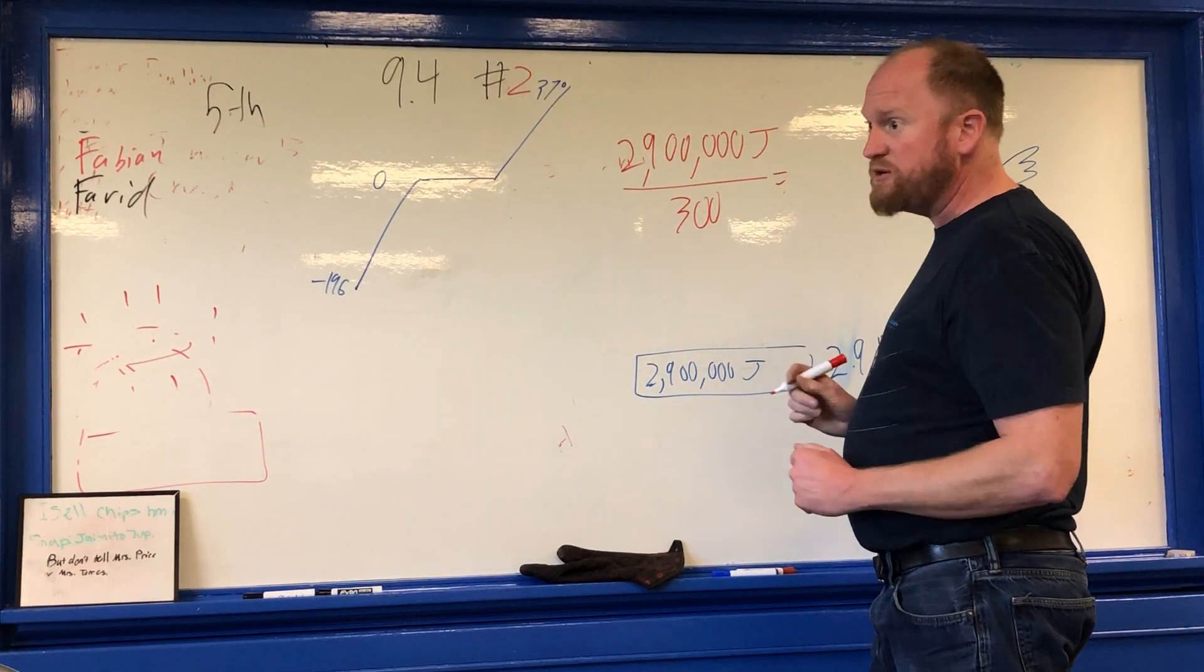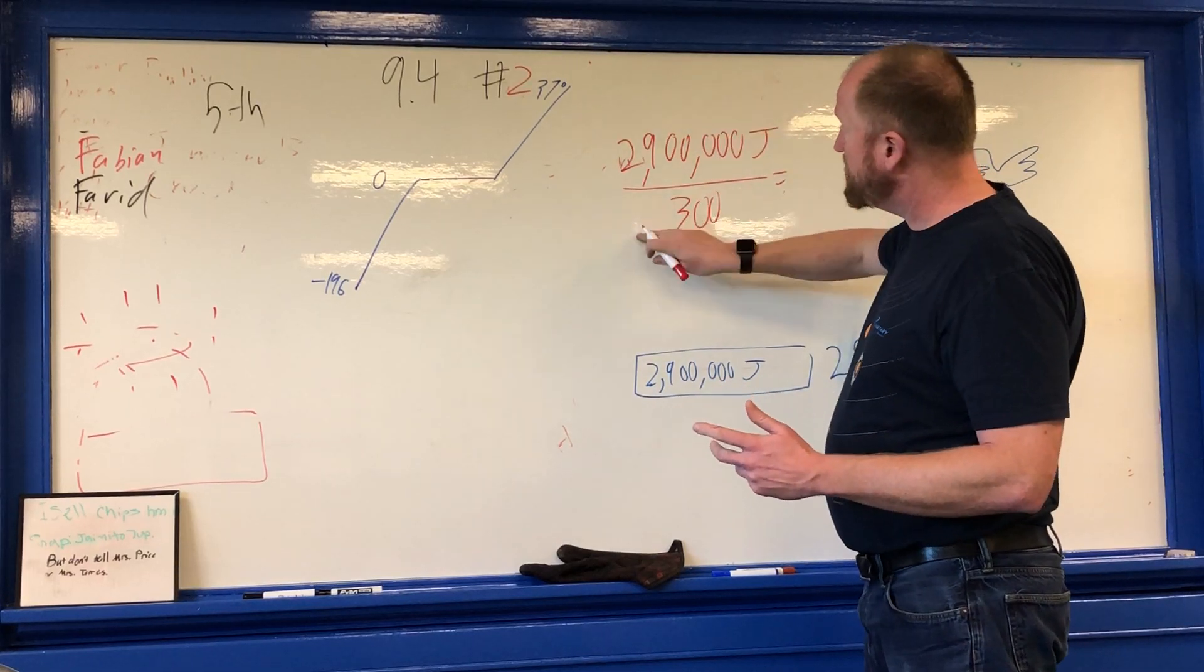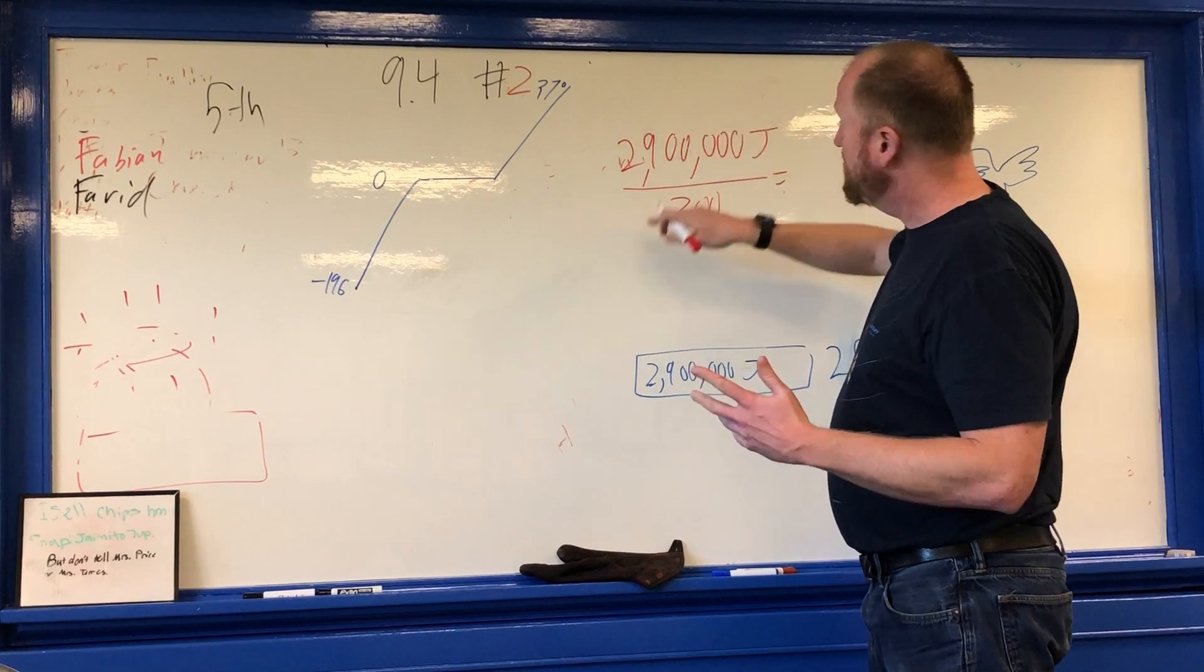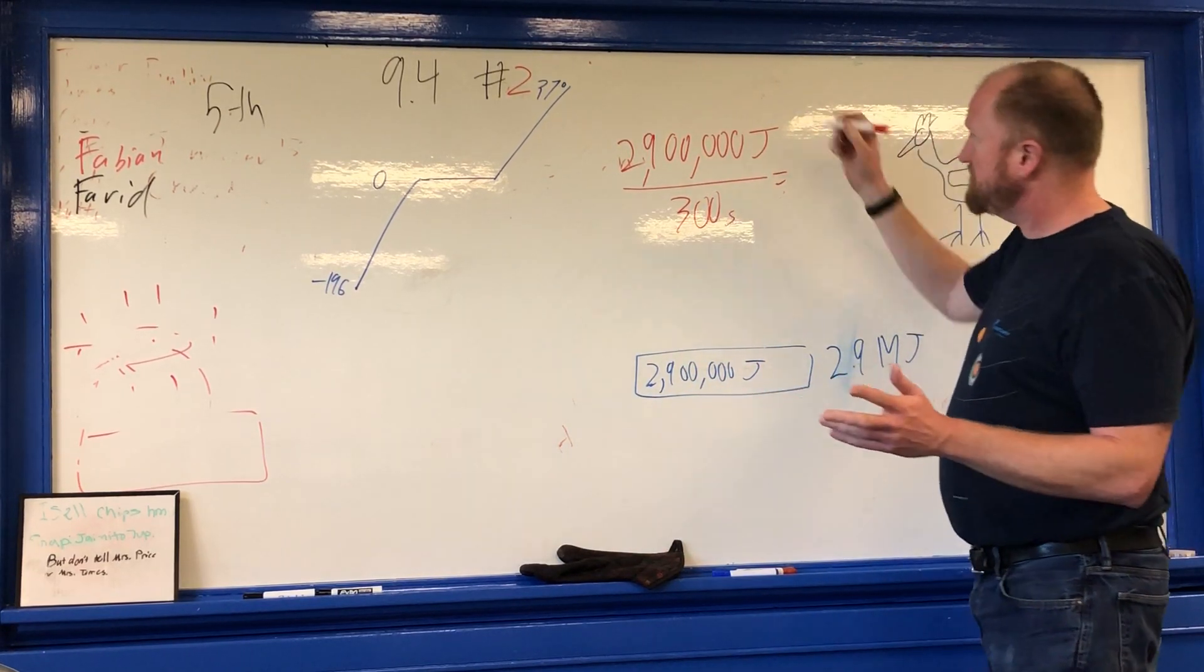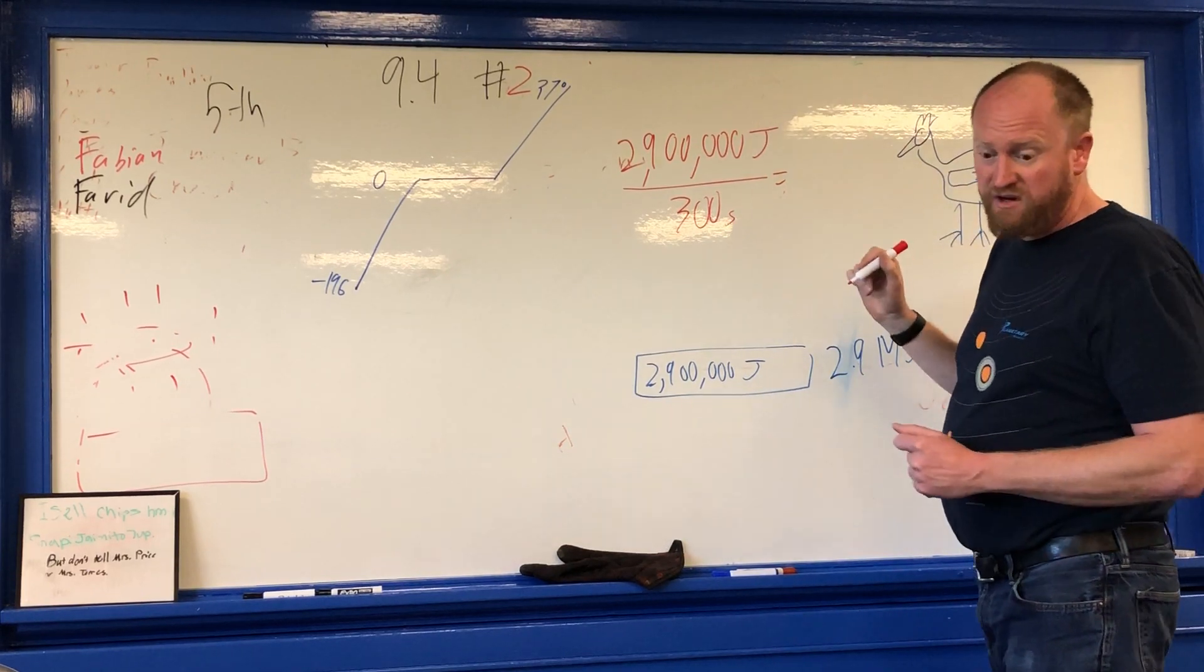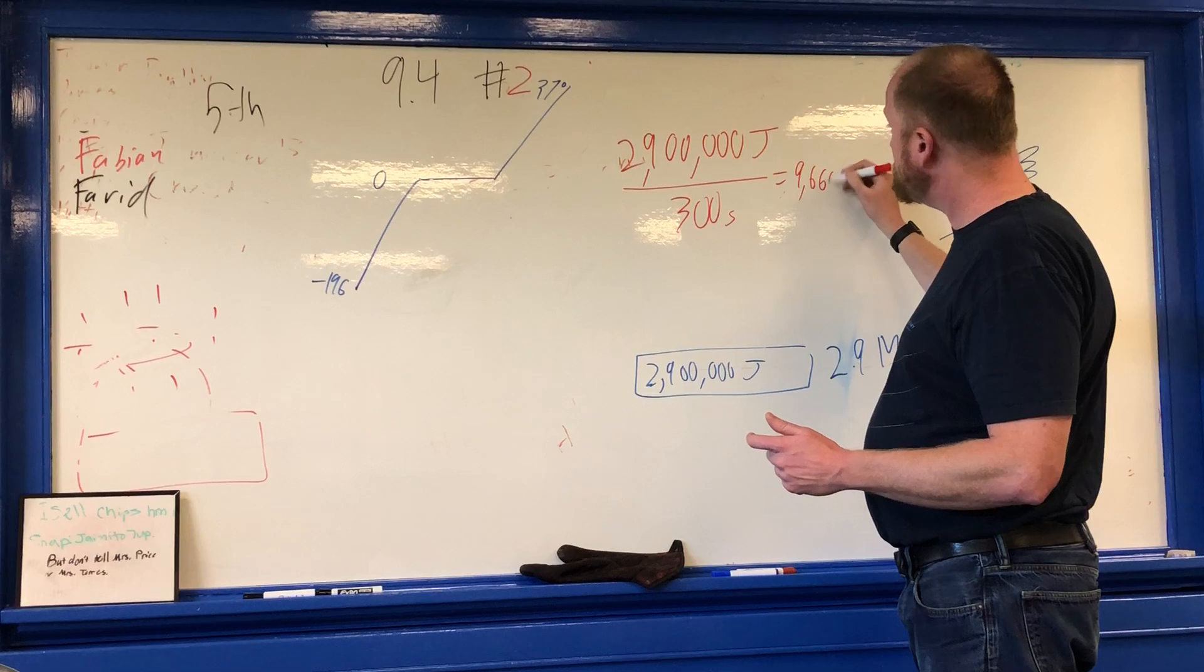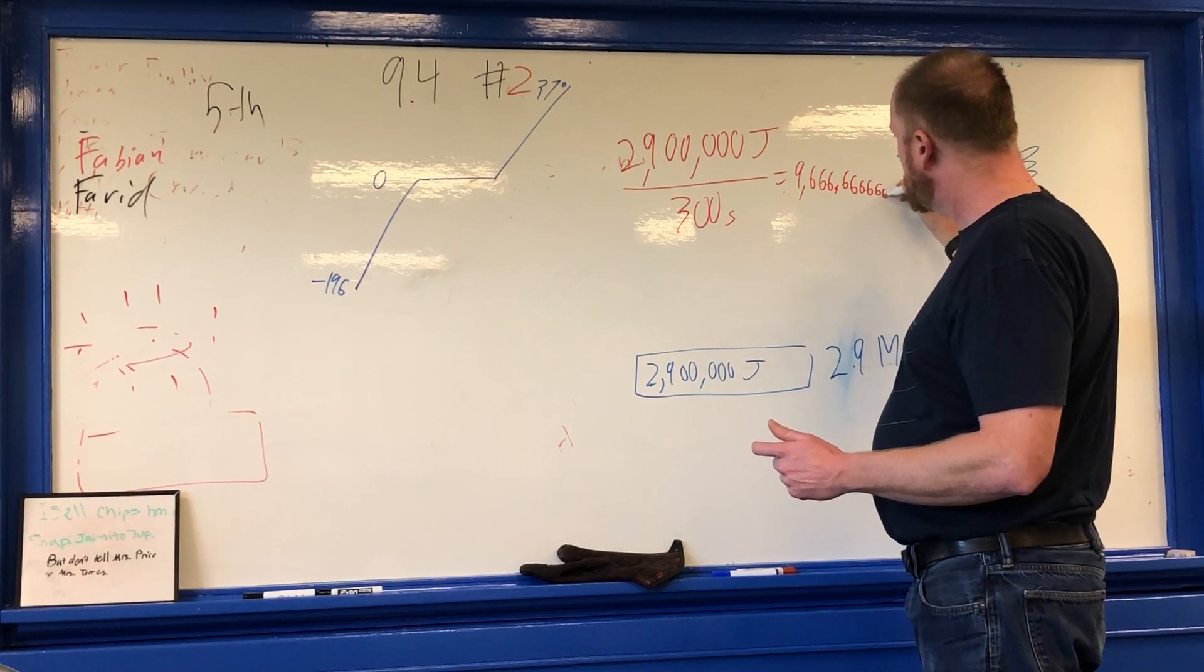So, how much power do you need? Well, remember, power is work divided by time. Joules of work, in this case, the work is heating, seconds of time. And if you just take your answer, divide it by 300, I got 9,666.666666666.